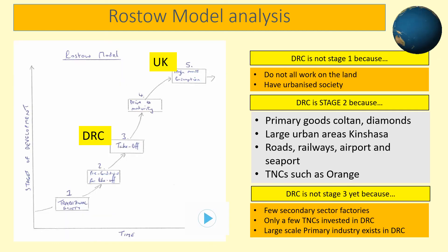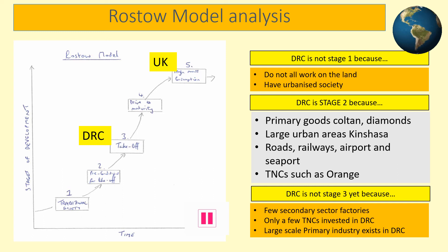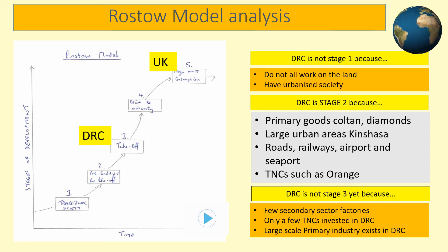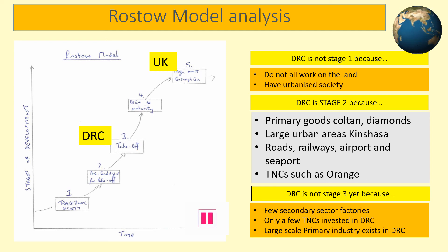It is very important for us to be able to justify where the DRC is on the Rostow model. We know the DRC is not just a stage one traditional society because not everyone works on the land or lives in rural areas. The DRC is in stage two — preconditions for take-off — because it is still dominated by primary industry such as the mining of coltan and diamonds. The DRC has large cities such as Kolwezi, Bukavu, and Kinshasa where nearly 9 million people live. The DRC has also invested in improving infrastructure, often through help from abroad such as China, so that it can trade more.